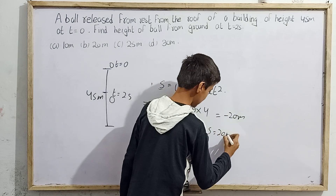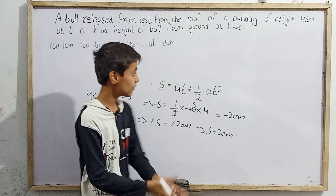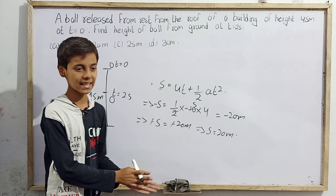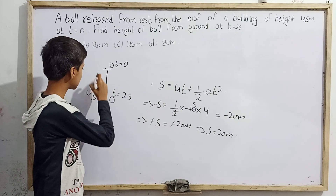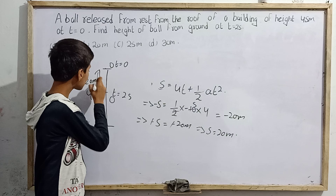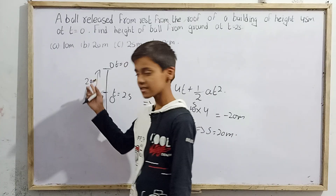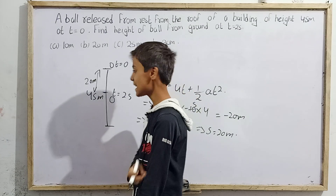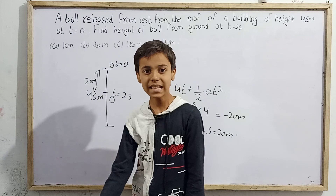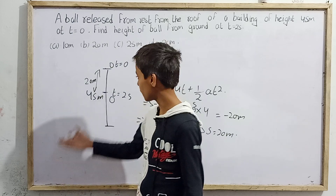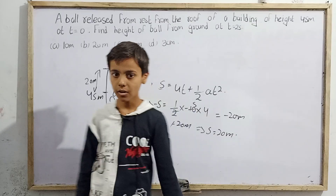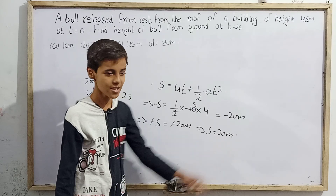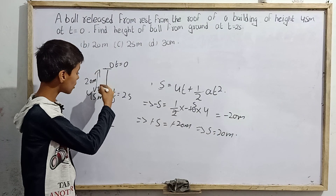This implies s equals 20 meters. In two seconds, when the ball is released from the roof, it covers 20 meters. You can also verify this using Galileo's trick: in the first second it covers 5 meters, in the second second it covers 3 times 5 equals 15 meters. So 5 plus 15 equals 20 meters. Either way, s equals 20 meters.